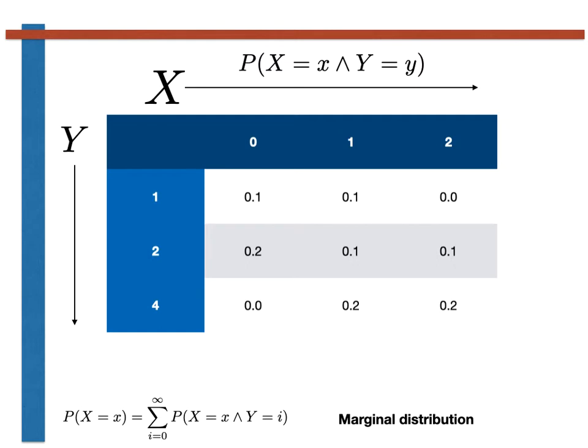Displaying the joint probability mass function in the table gives us a nice visual way of remembering how to compute the marginal distribution — we simply sum each of the columns to give the probability that X equals a particular value. By similar logic, we compute the marginal distribution for Y by summing the elements in each row. This is presumably why they are called marginals: we write these distributions on the margins of the table.